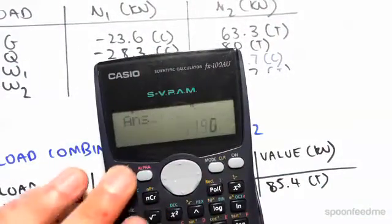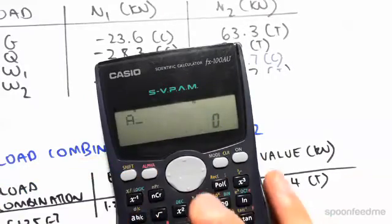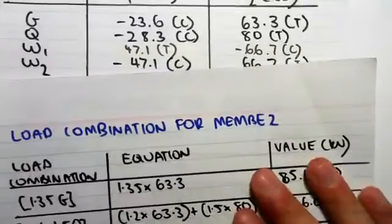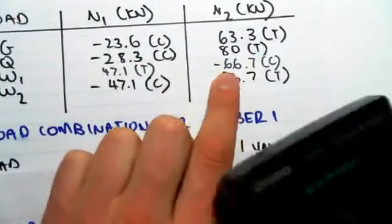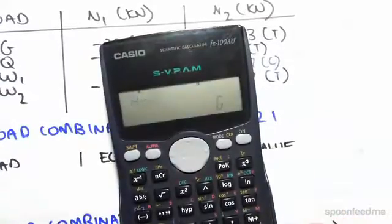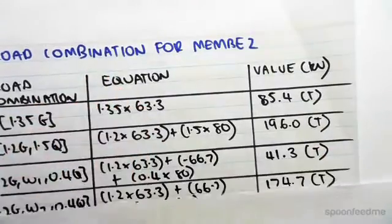Now you'll see why. We just got that stored value plus wind case 1. Wind case 1 is minus 66.7, so 41.3 in tension.